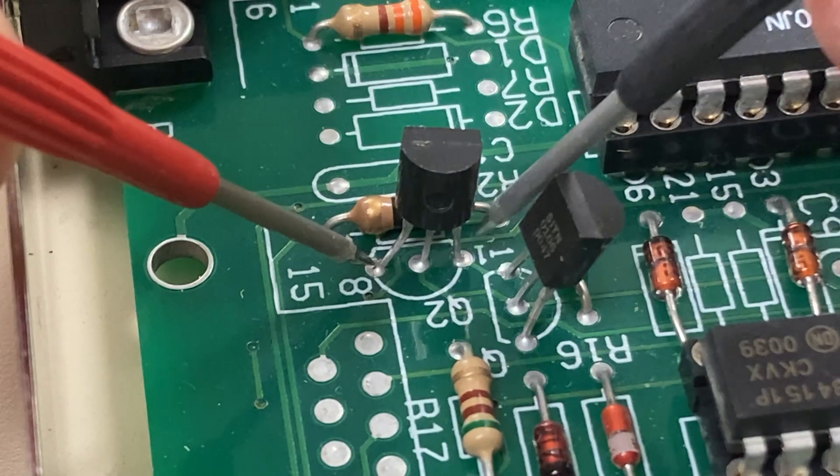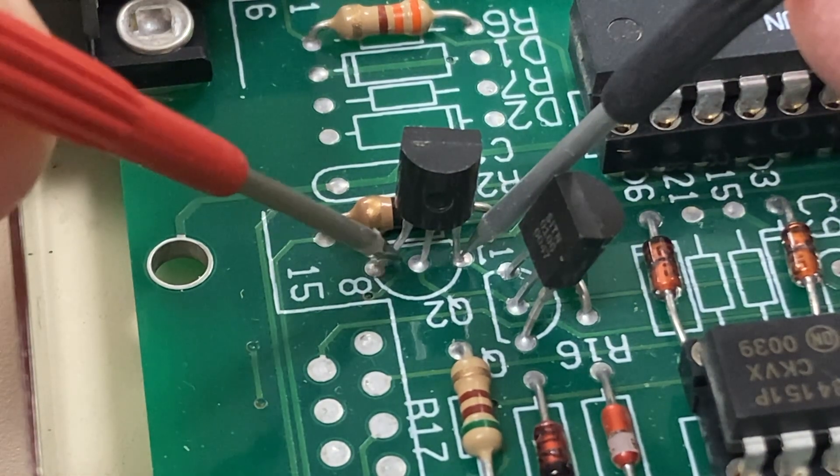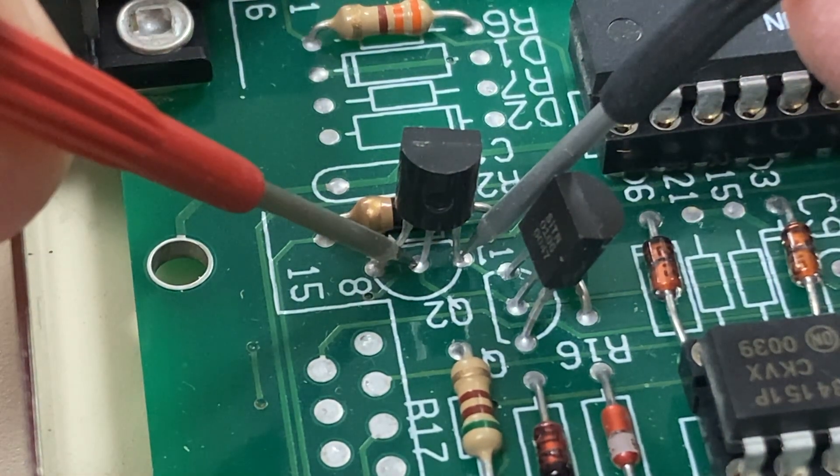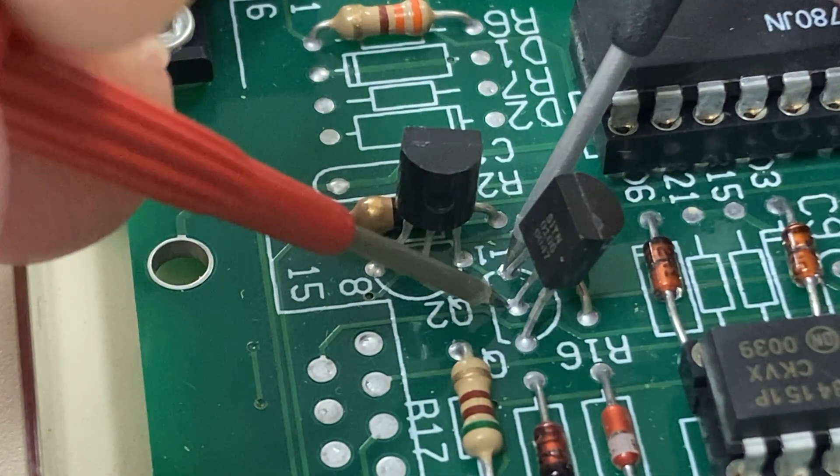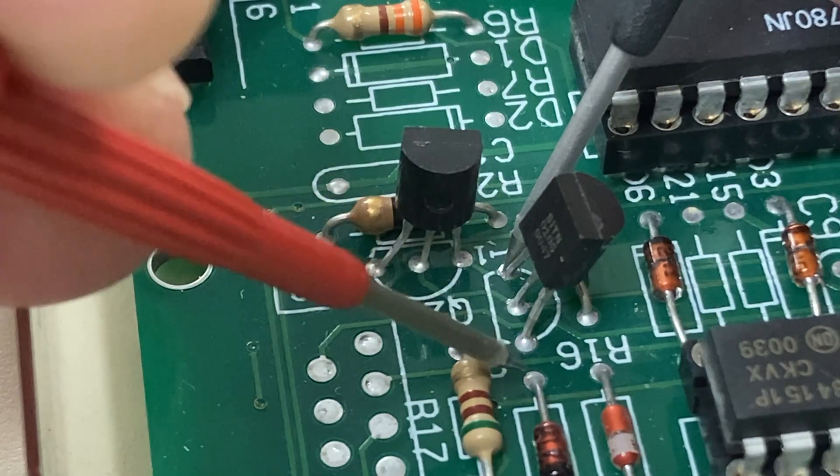Transistors are a slightly more complex semiconductor. They are basically an electrical valve that is controlled by the amount of voltage applied to the base connection. The signatures shown are similar to simple and Zener diodes.